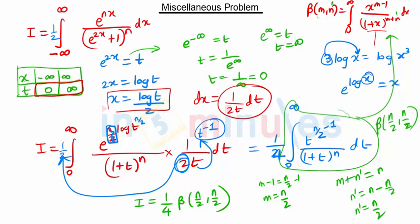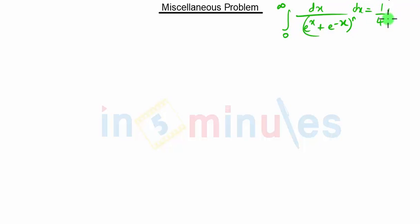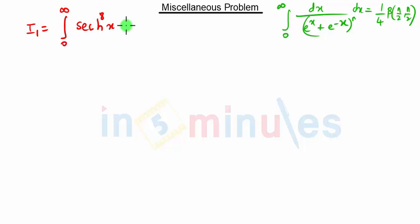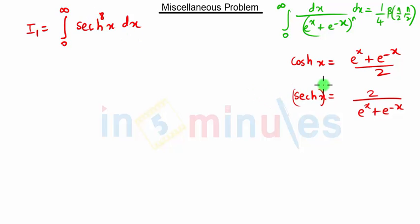Our question is not over yet. Using the proof we just established, we now have to calculate the integration of sech(x) the whole raised to 8 dx. Our proved result is: integration from 0 to infinity of dx upon (e raised to x plus e raised to minus x) raised to n equals 1/4 Beta of n/2 comma n/2. For the new problem, we recall that cosh(x) equals (e^x + e^{-x})/2, so sech(x) equals 1/cosh(x) equals 2 upon (e^x + e^{-x}), and sech^8(x) is that expression raised to 8.